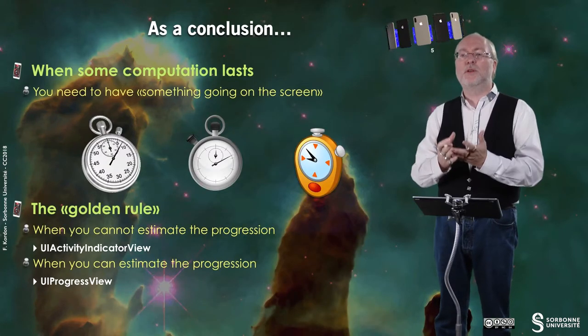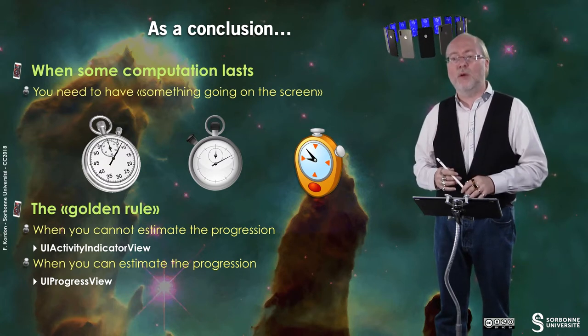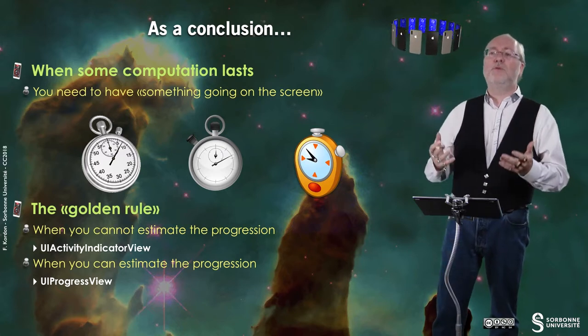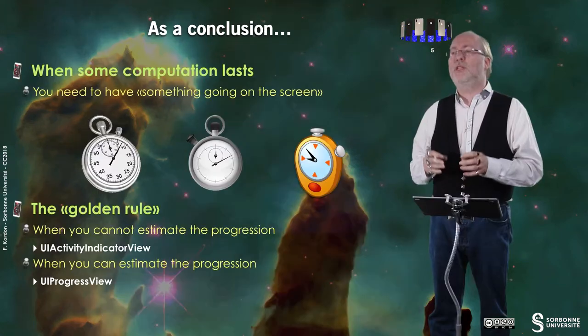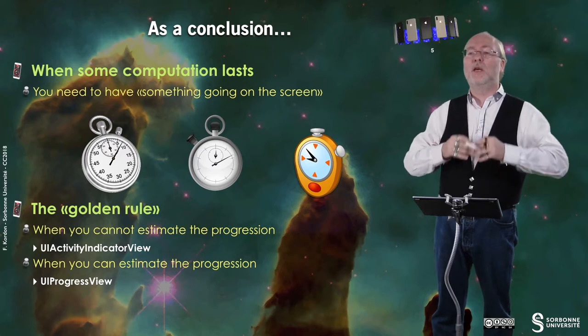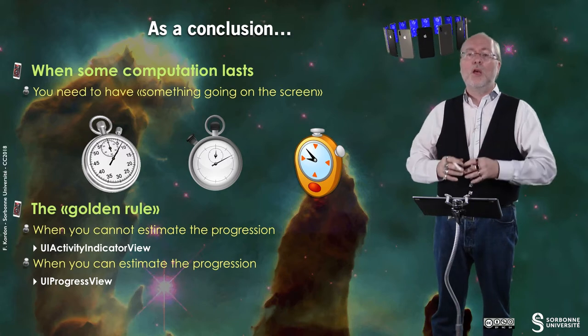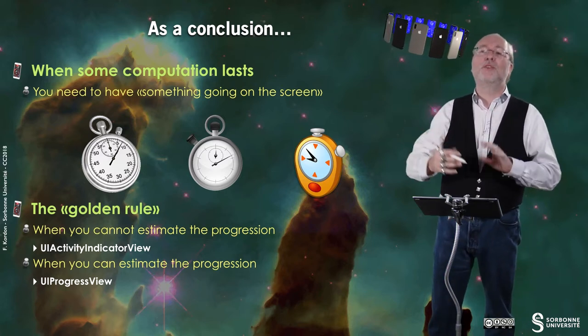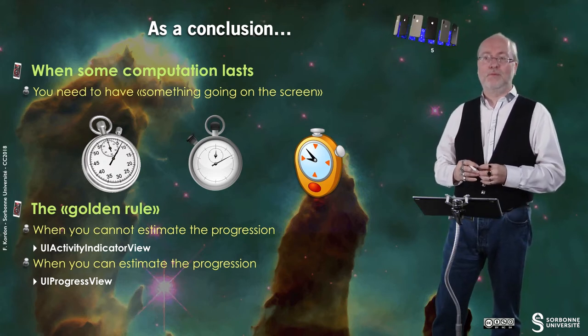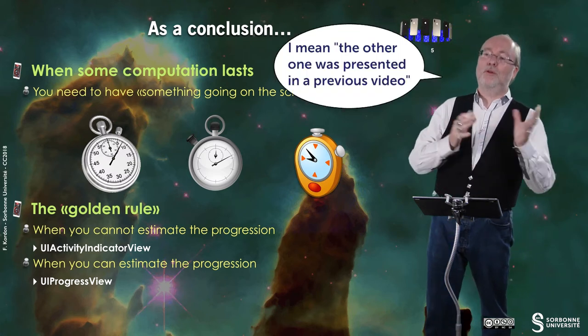As a conclusion, when computation lasts, it's important to do something for the user and show on your screen that something is going on. This is true for programming in general, especially if you intend to have a real human behind your application. The golden rule is: when you cannot estimate the duration of the progression — in terms of time or bytes received — you use a UIActivityIndicatorView. Otherwise, when you can estimate how far from completing the job you are, you should use a UIProgressView. These two mechanisms are both useful. Thank you very much for your attention.